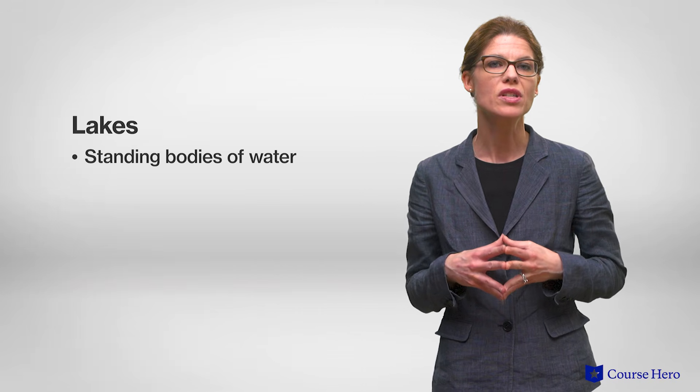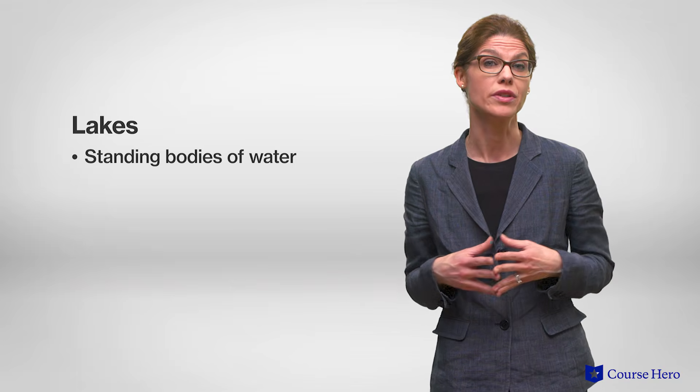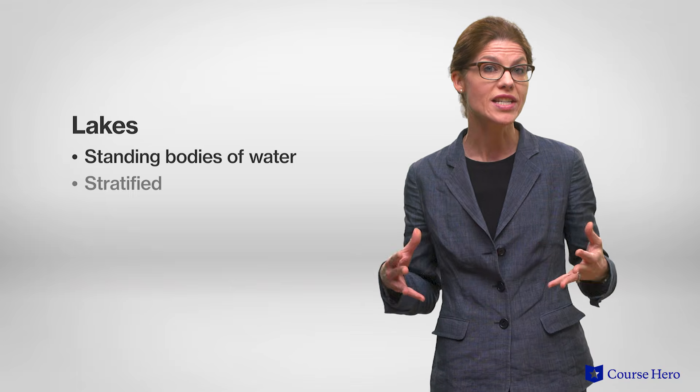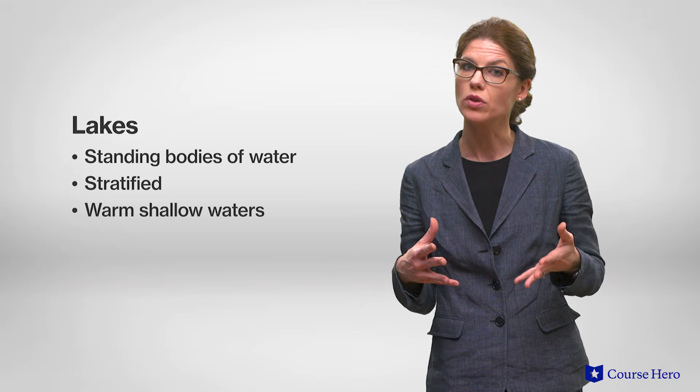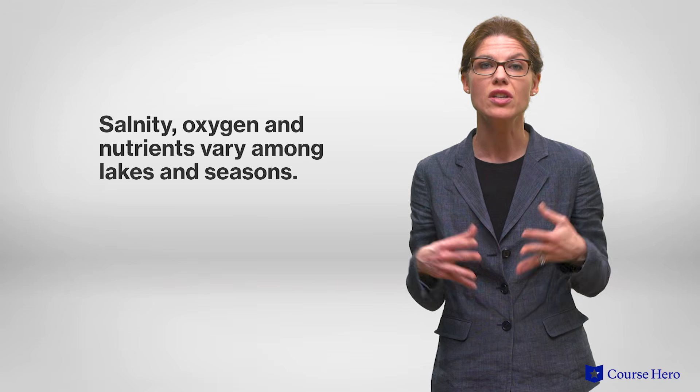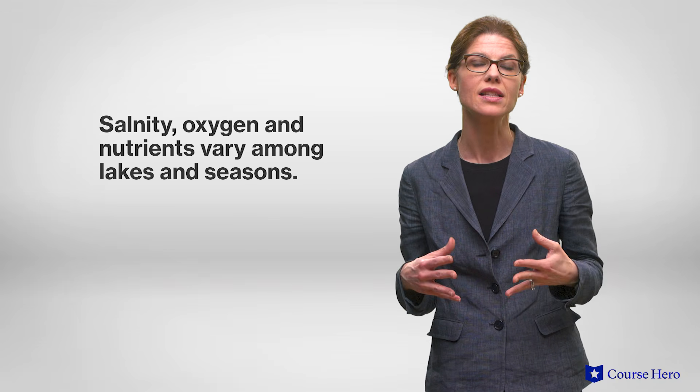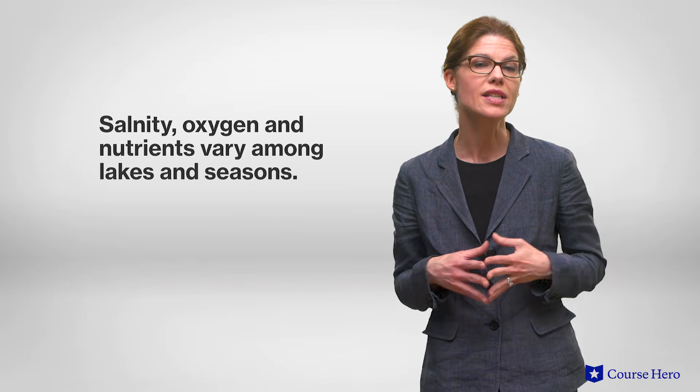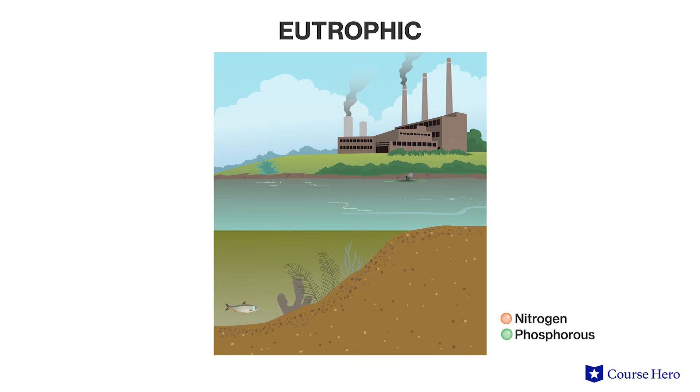Lakes are standing bodies of water, usually freshwater. They are stratified, resulting in warm shallow waters and cold deep waters. Salinity, oxygen, and nutrient levels vary among lakes and also with the seasons. Some lakes are clear, low in nutrients and high in oxygen. Other lakes are murky and low in oxygen. This situation arises when urban and agricultural runoff leads to eutrophication.